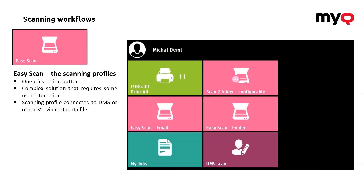On the other hand, sometimes you need a little bit more complex solution. You would like to provide the user some options to select from certain lists which will affect the output, or you would like to create a metadata file for your DMS. That is represented here by the DMS scan button, which is a specially modified button with a codebook and settings that ensure the metadata file is generated.